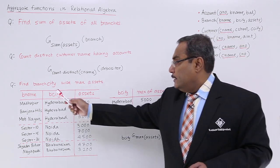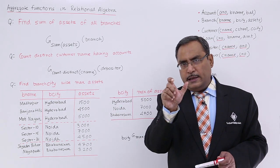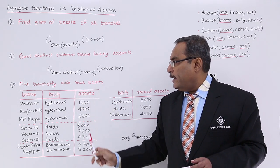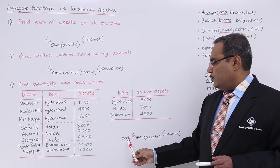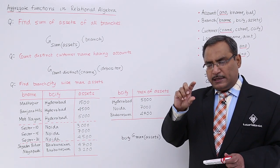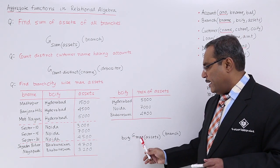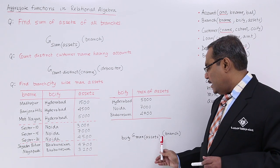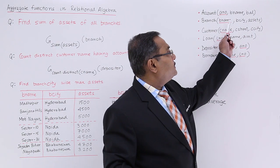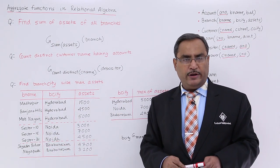The next query: find branch city-wise maximum assets. That means the output will have branch city and then the maximum assets. The query is written by first doing a group by on branch city — similar branch cities form one group — and then calculating the maximum of the asset values for each group, operated on branch. The branch relation has branch name, branch city, and assets.